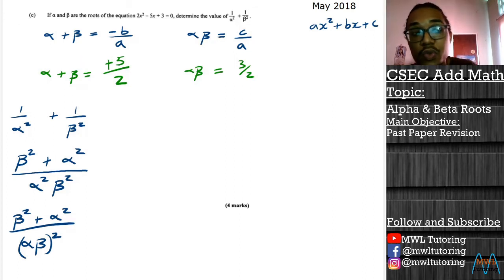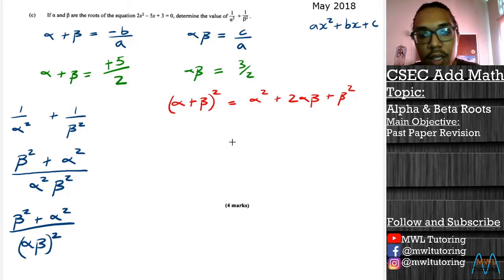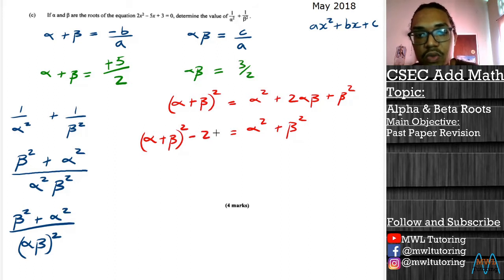Let's take a look at what happens when we do square it. Alpha plus beta squared is a binomial expression and if we expand it we get alpha squared plus 2 alpha beta plus beta squared. Now what that means is that if we want to get this beta squared plus alpha squared, we have to send this 2 alpha beta to the other side, so we end up with alpha plus beta squared minus 2 alpha beta.